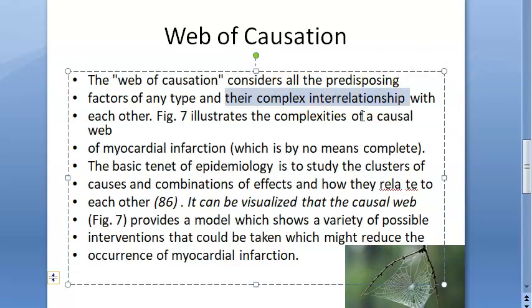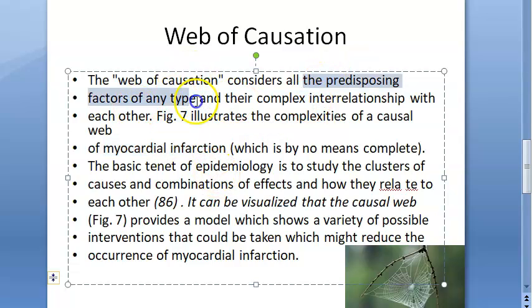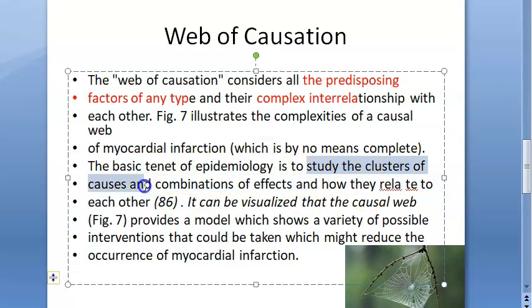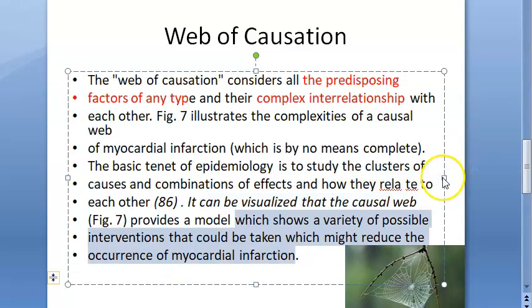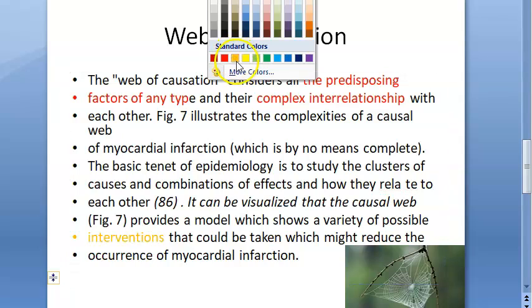The basic tenet of epidemiology is to study the cluster of causes and combinations of effects — how these causes and effects relate to each other. This same complex interrelationship can be visualized as a causal web, which helps you decide the intervention.